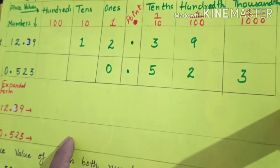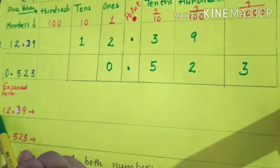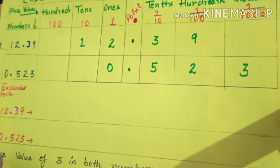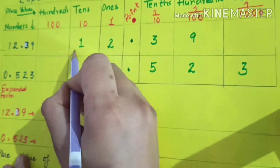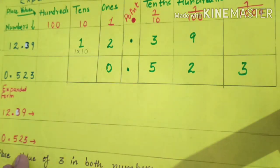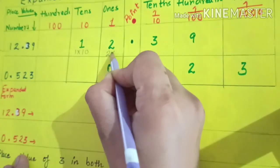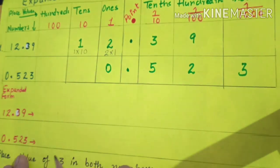Now I have to write the expanded form of 12.39. The first digit is one, which is at the tens place, so the place value of one is one multiplied by ten. Similarly, the place value of two is two multiplied by one, since two is at the ones place. Three is at the tenths place.